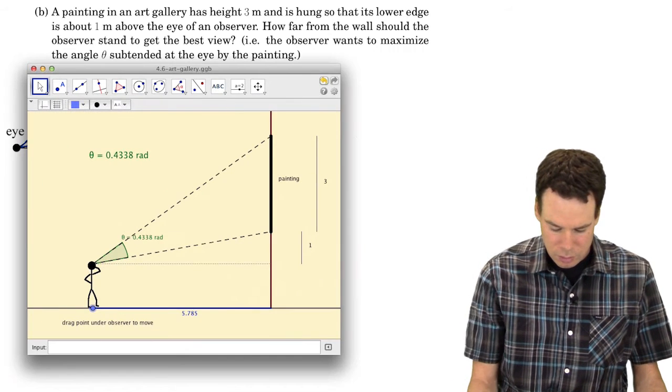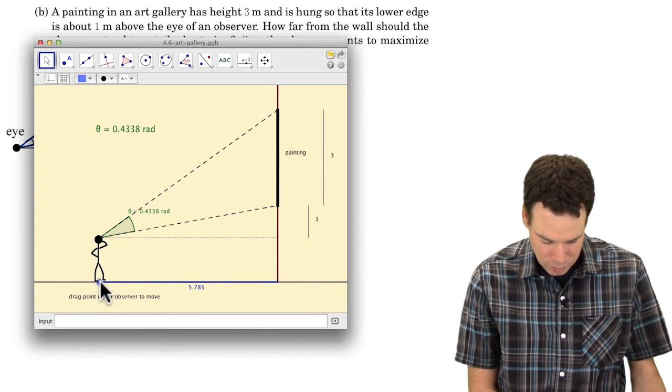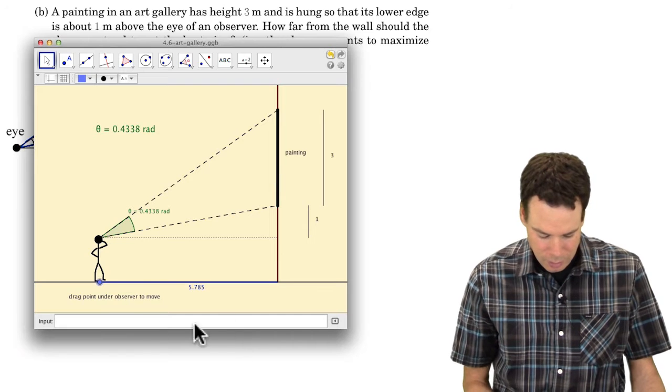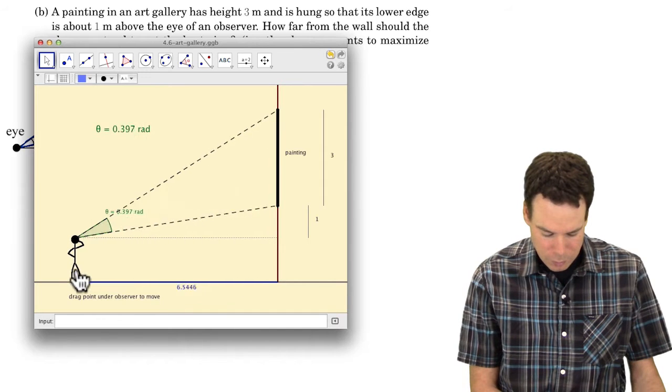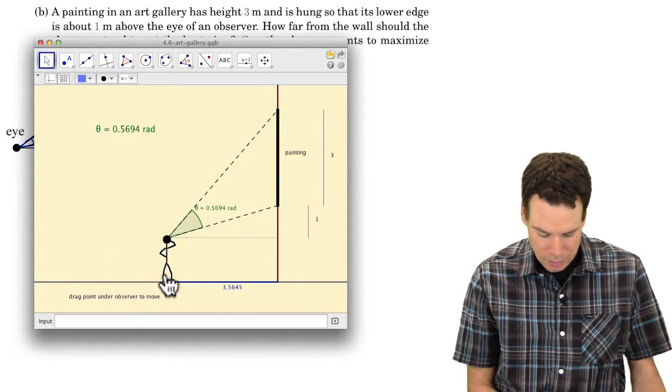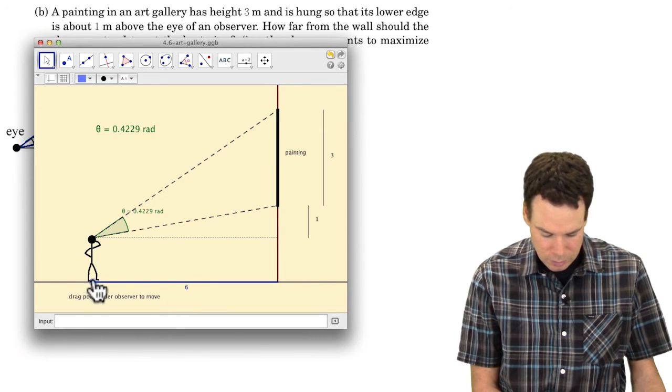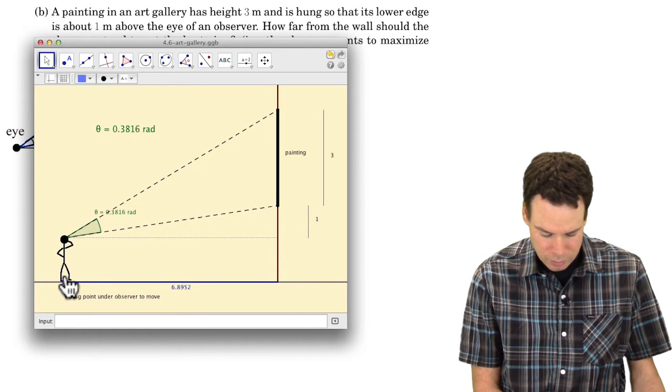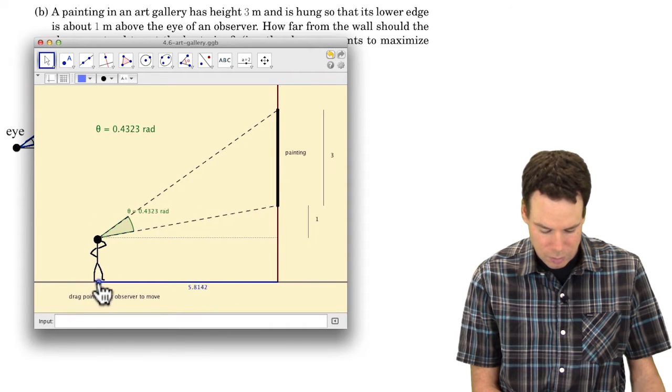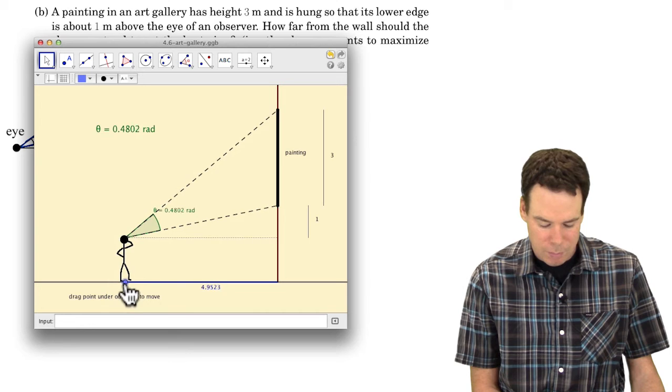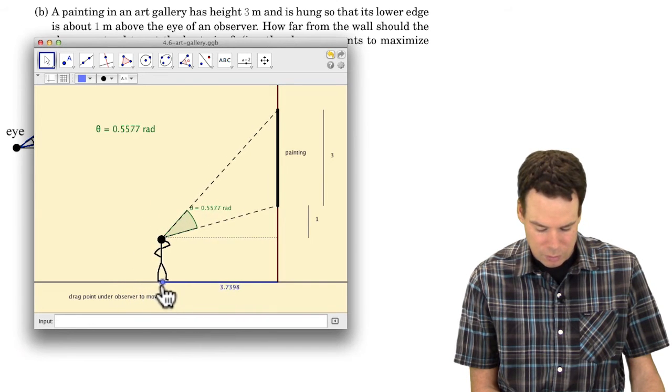Now let's have a look just so we get an idea of what's going on here. I worked up a quick dynamic illustration. So we've got our observer, we've got our painting and the observer is trying to figure out the best place to stand. Notice that as the observer moves the angle subtended at their eye by the painting changes. You can see that over here it's pretty small. You can watch the numbers I've indicated the angle here. You can see that it's getting bigger and bigger, so they're getting a better viewing angle.